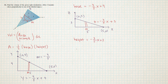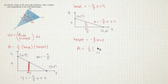If we trace this line back to the original picture, it corresponds to the height of our triangle. So the area is going to be one half times the base — negative four fifths X plus 4 — times the height — negative three fifths X plus 3.